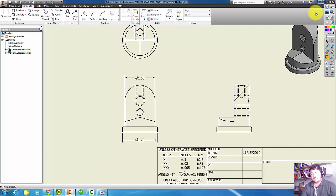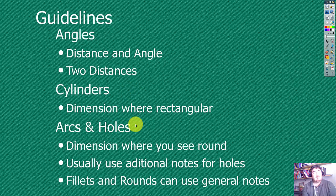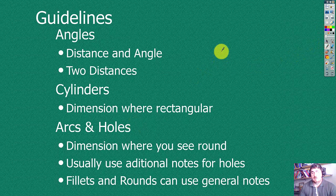If you have an arc or a hole, we usually want to dimension those in the view where we see them round. With holes we usually use additional notes, and with fillet rounds, if there's a lot of them, we can use a general note in the title block saying all fillets 0.12, all rounds 0.3, whatever. Interior corners are fillets, exterior corners are rounds. Sometimes if you're designing things that are going to be molded, either with casting or injection molding, then a fillet on the part would be a round on the mold, so you'd have to take that into consideration.